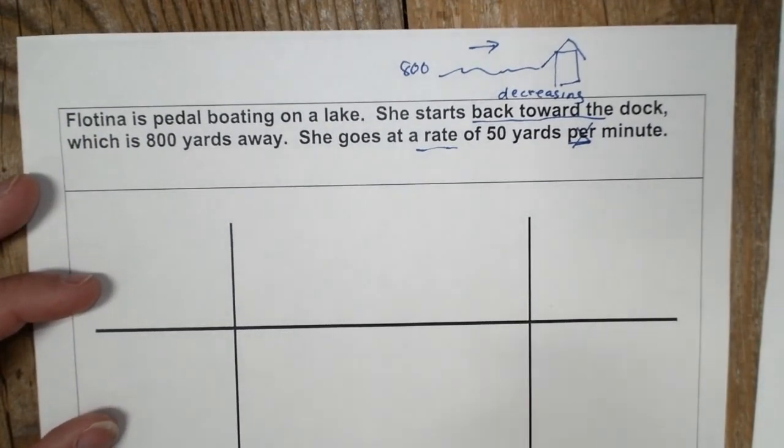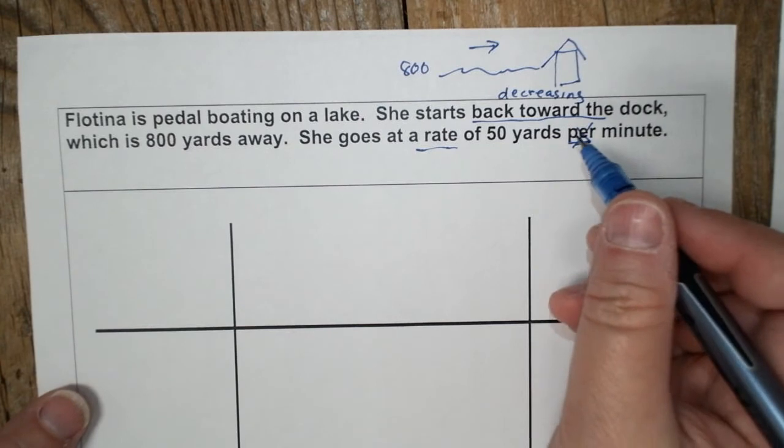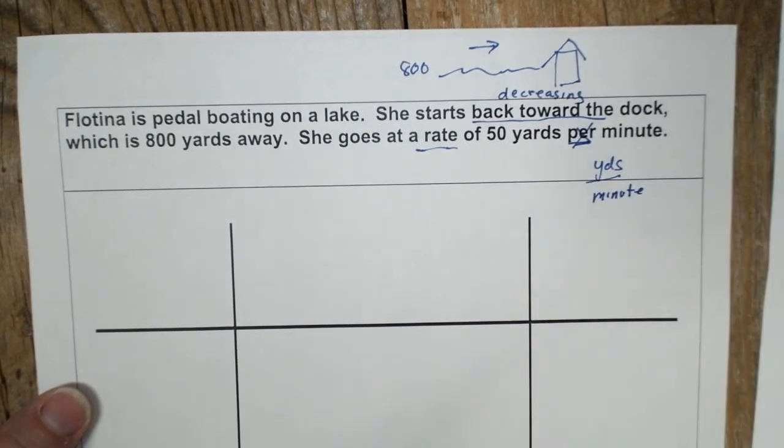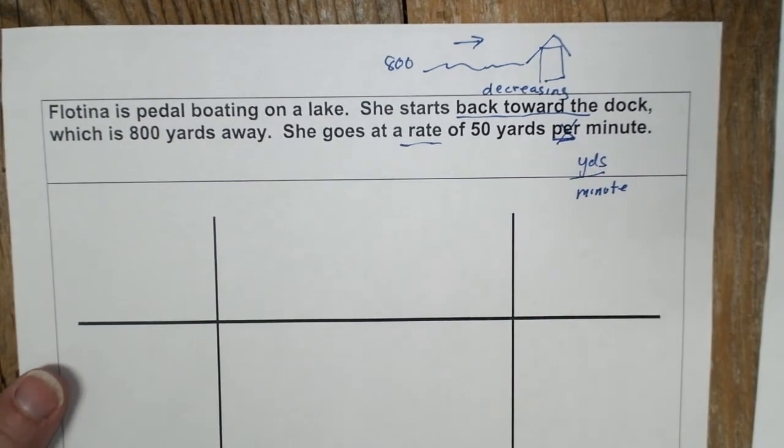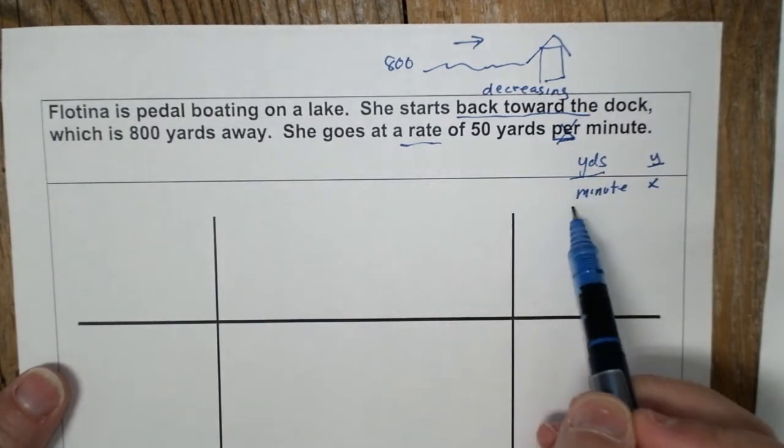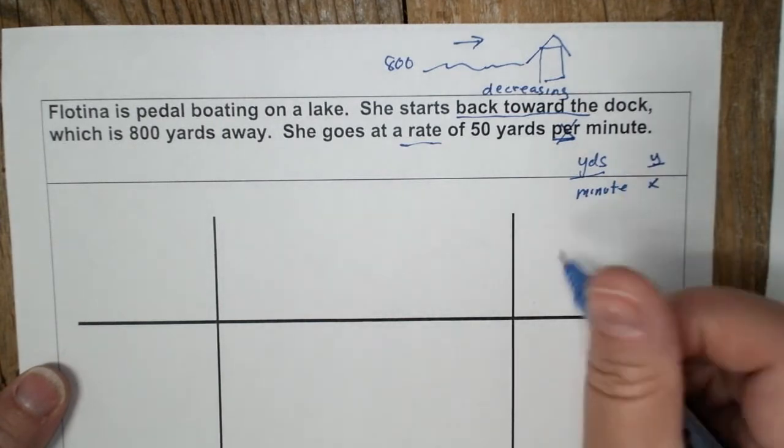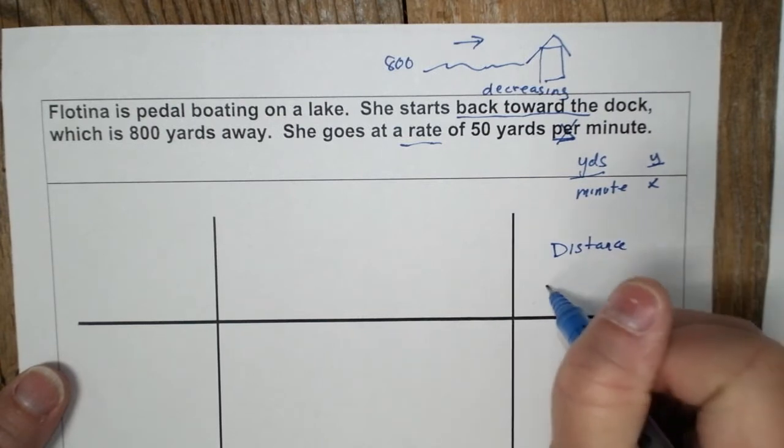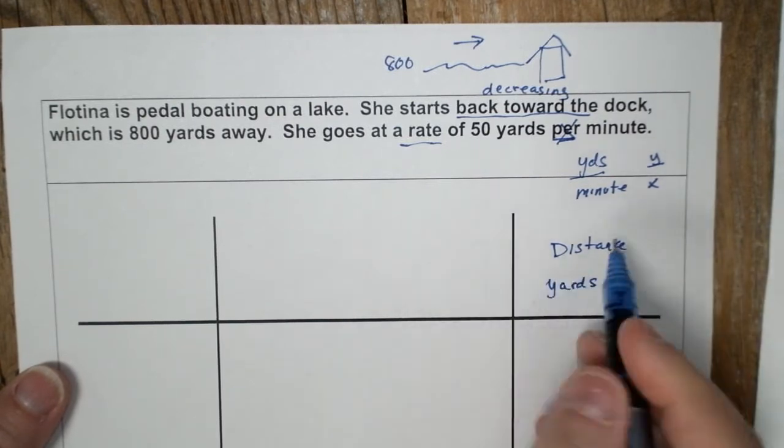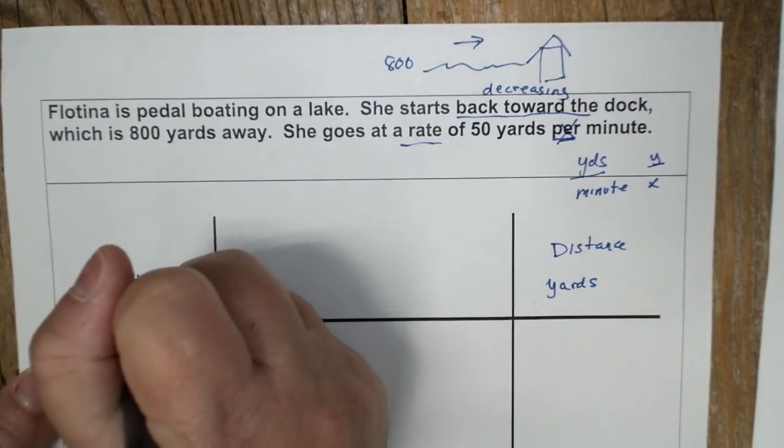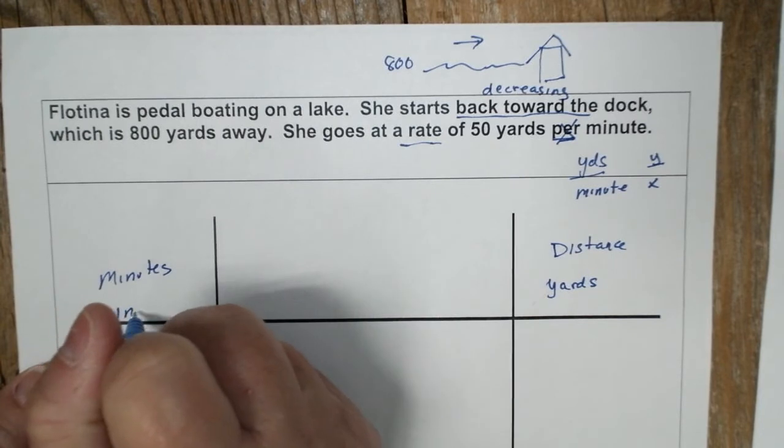So our input, and this right here per minute, it's yards per minute. And remember when you found slope, it was Y over X. So when you have this yards per minute, it will actually tell you that your Y is distance in yards.